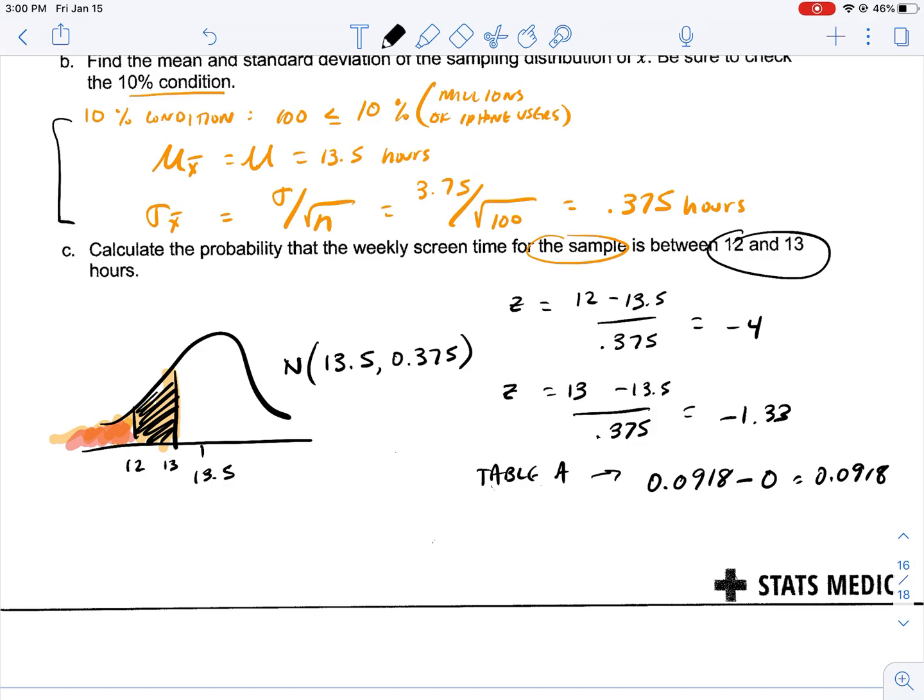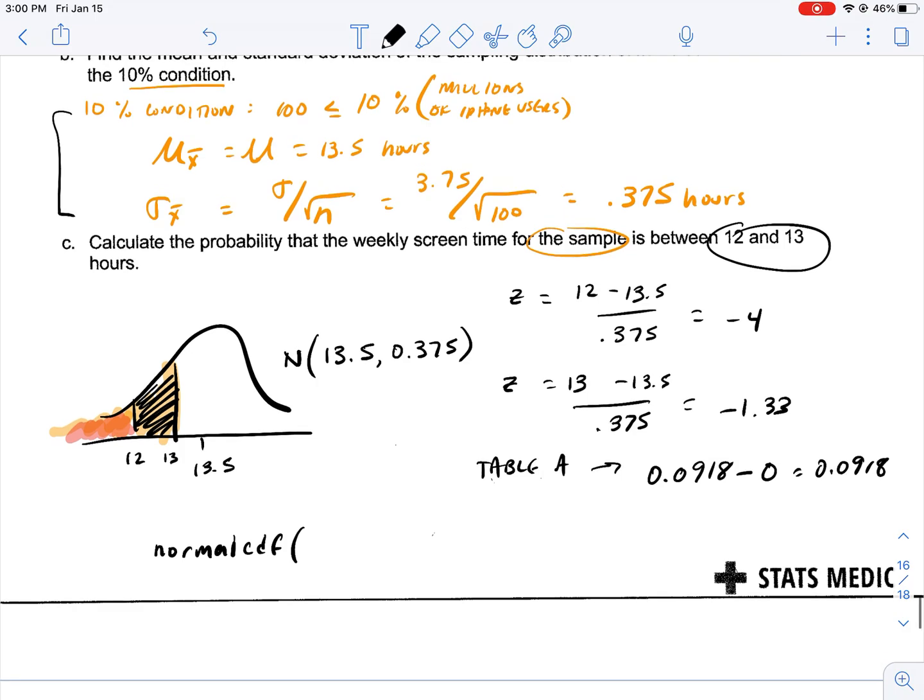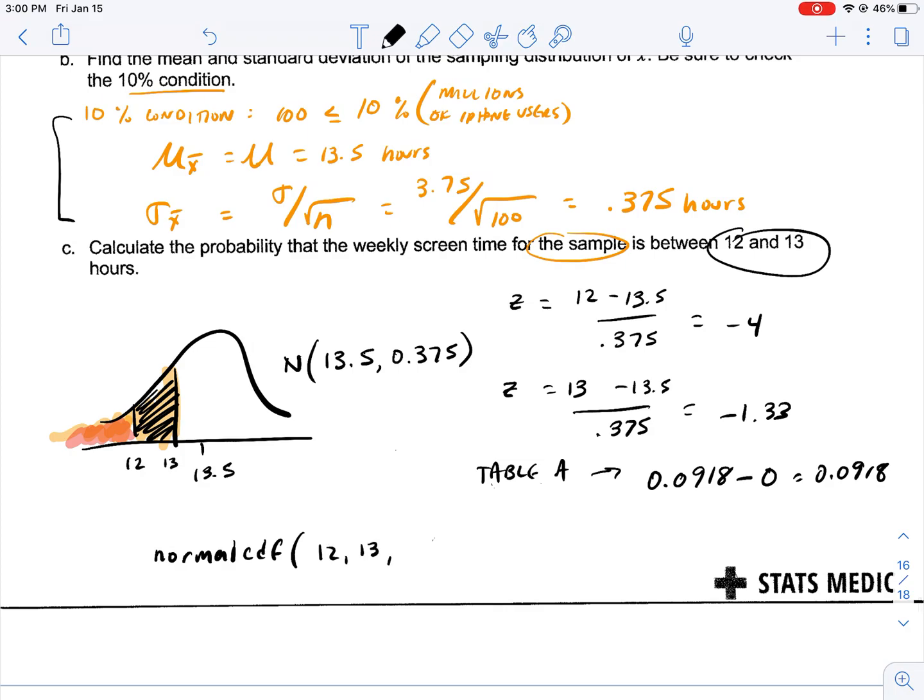The other way to do this would be to do our normal CDF. And when we do that, as a reminder, you have to write in your labels for all of your data. We don't want a naked answer on the AP test. So, we want to go between 12 and 13, and our mean is 13.5, our standard deviation is 0.375. This is our lower, this is our upper, this is our mean, this is our standard deviation. normalcdf(12, 13, 13.5, 0.375). And we get 0.0912.